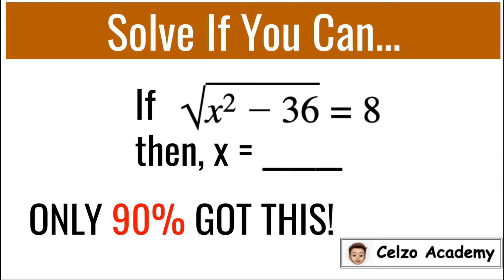Today we're solving a problem involving radical equations. Can you solve this problem? If the square root of x squared minus 36 is equal to 8, then what do you think is the value or values of x that will make this equation true? Give it a try and play the video whenever you're ready for the solutions.